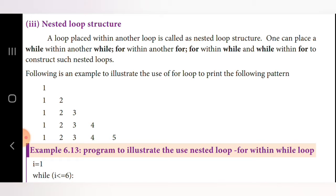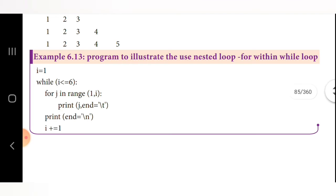Now you can see the example: how to print the number pattern 1 / 1,2 / 1,2,3 / 1,2,3,4 / 1,2,3,4,5. The program uses i equal to 1, and while i less than or equal to 6, check the condition. Then we use a for loop: for j in range(1, i), which creates a list of values using the range function.